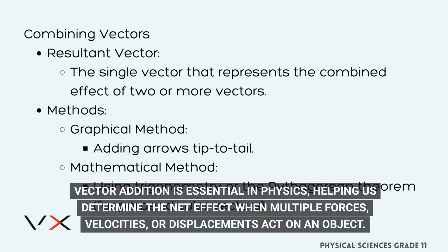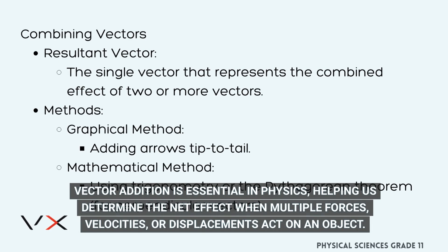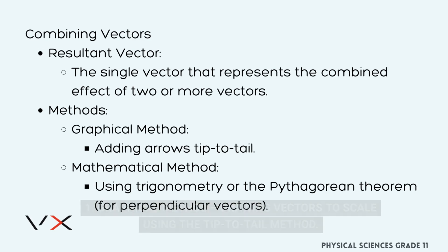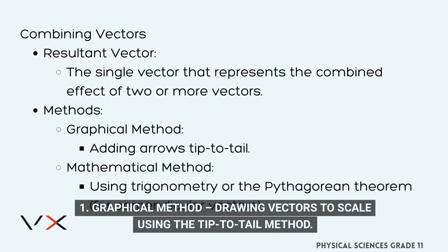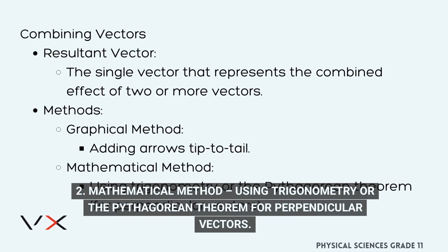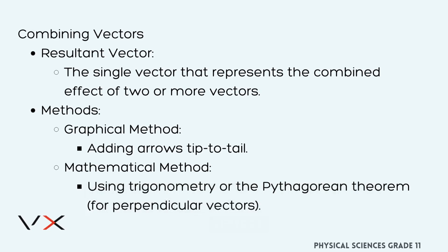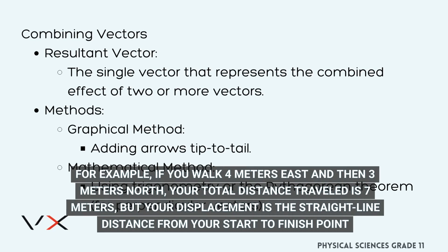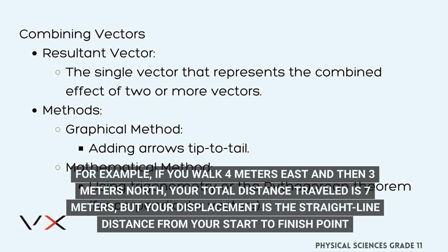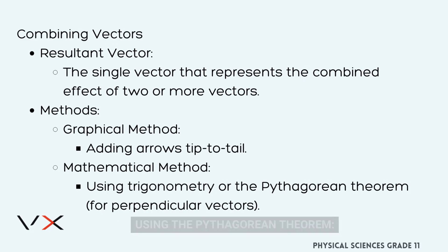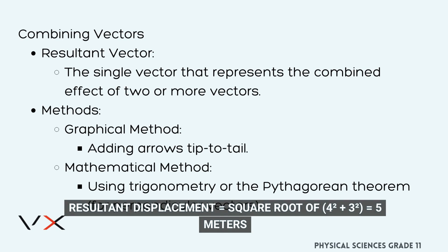Vector addition is essential in physics, helping us determine the net effect when multiple forces, velocities, or displacements act on an object. There are two main methods to add vectors: one, the graphical method — drawing vectors to scale using the tip-to-tail method; two, the mathematical method — using trigonometry or the Pythagorean theorem for perpendicular vectors. For example, if you walk 4 meters east and then 3 meters north, your total distance traveled is 7 meters, but your displacement is the straight-line distance from start to finish. Using the Pythagorean theorem, the resultant displacement equals the square root of 4² + 3² = 5 meters.